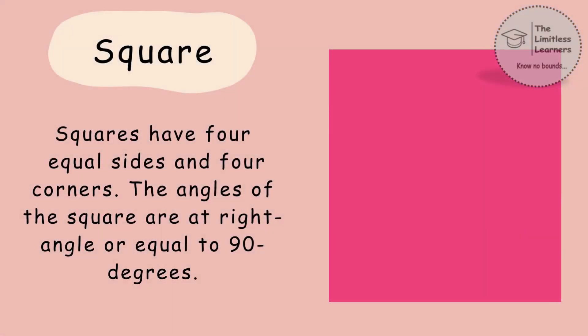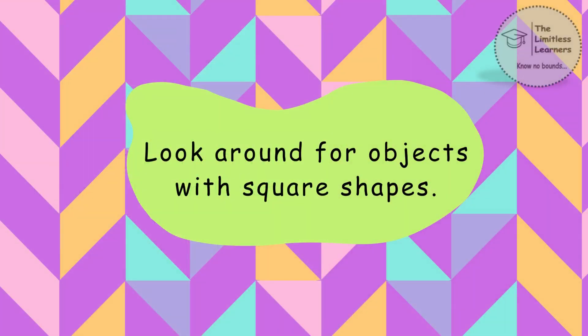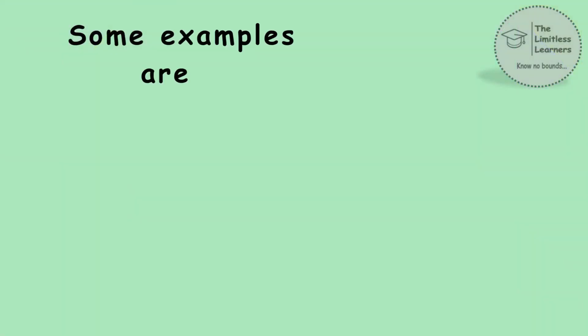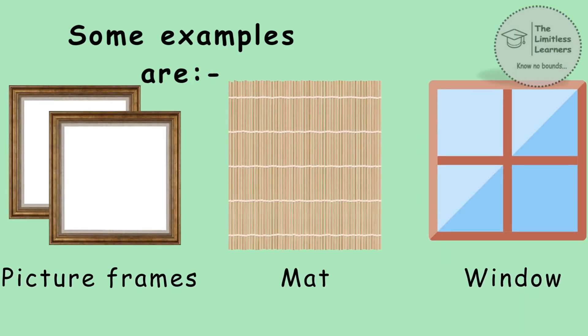Square. Squares have four equal sides and four corners. The angles of the square are at right angle or equal to 90 degrees. Look around for objects with square shapes. Some examples are picture frames, matte and window.